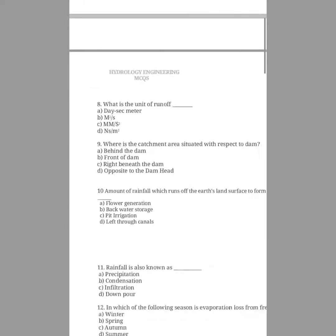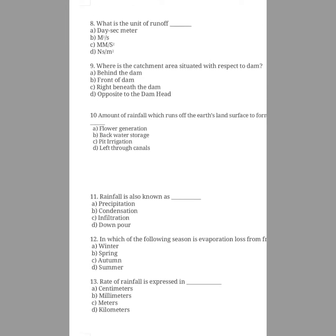Question number eight: the amount of rainfall which runs off the earth's land surface to form streams is used for what? The options are power generation, backwater storage, pit irrigation, lift through canal. The answer is power generation. The amount of rainfall which runs off the earth and land surface to streams and rivers is used for power generation.